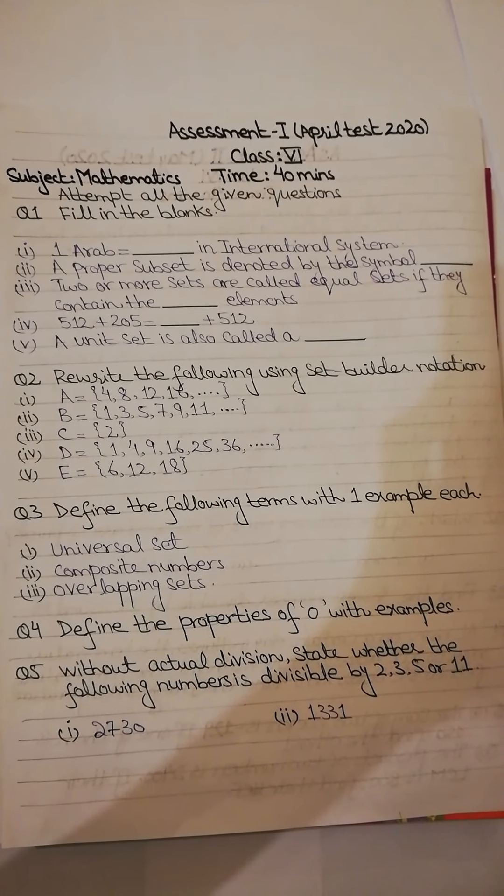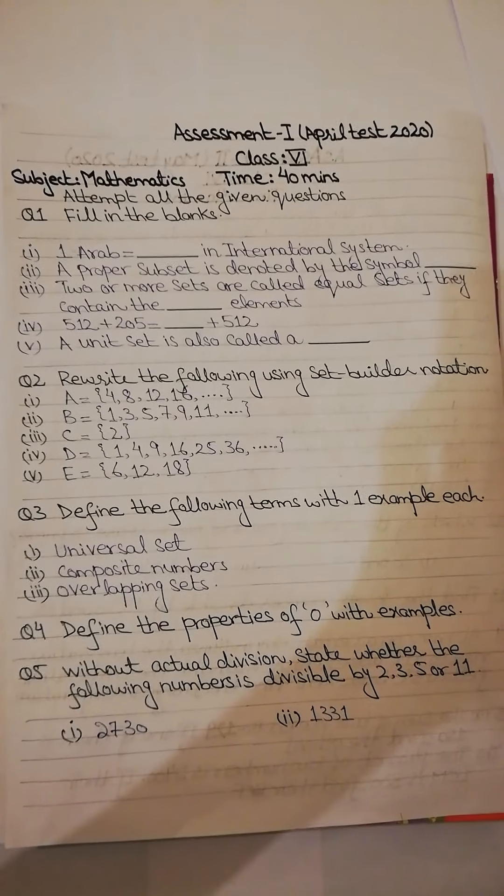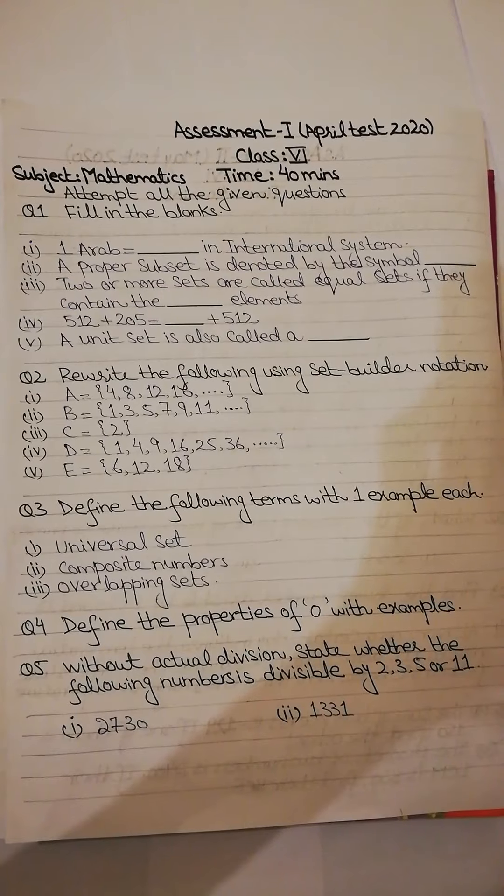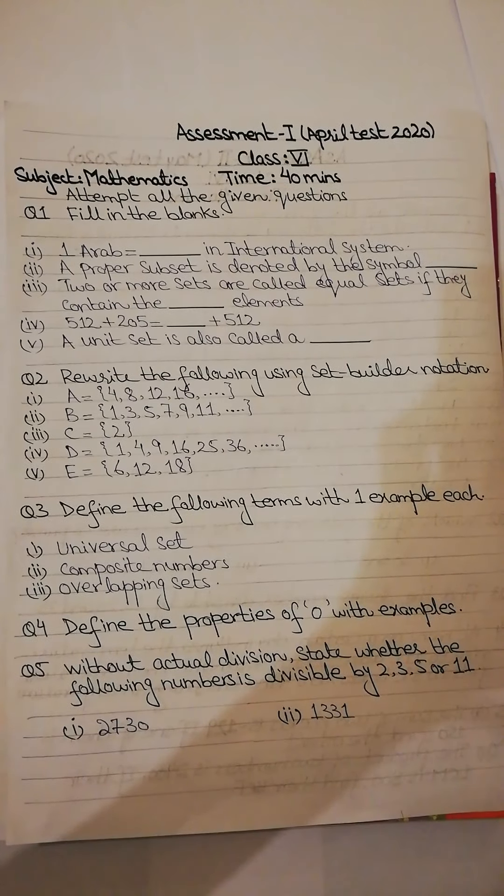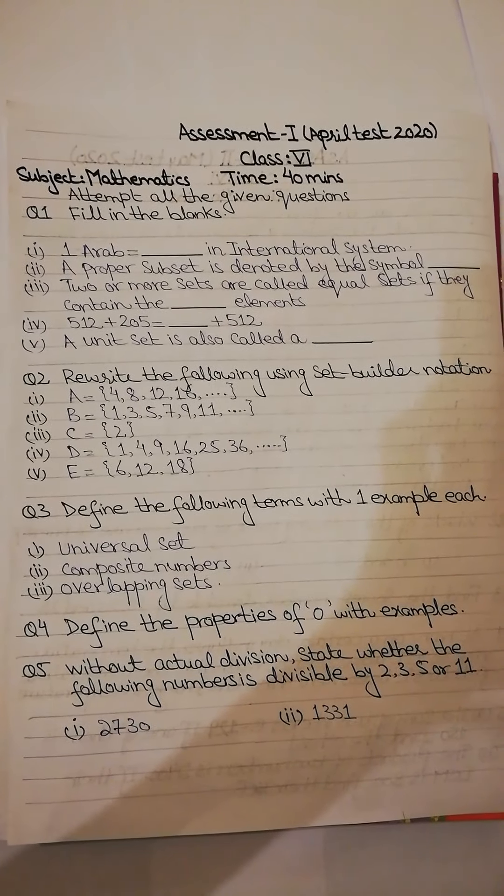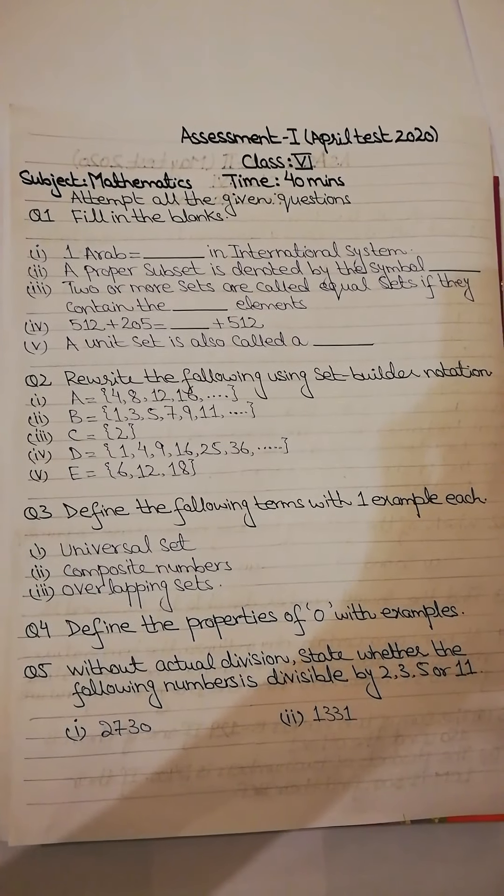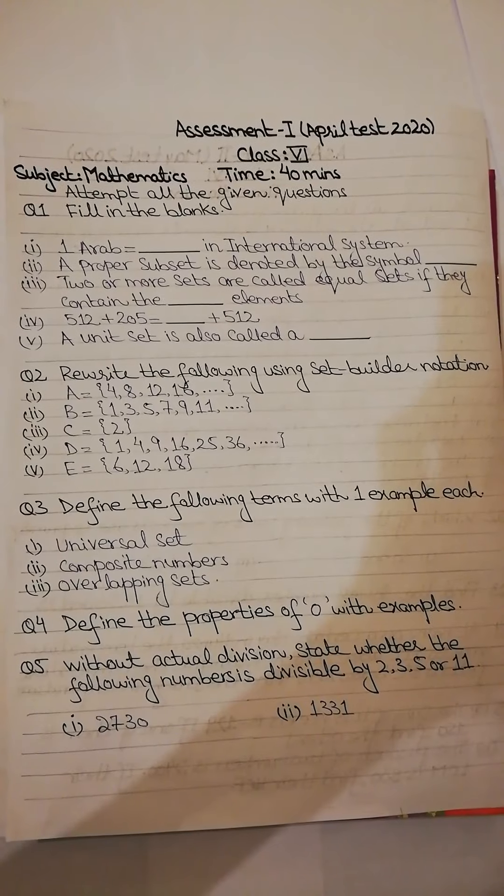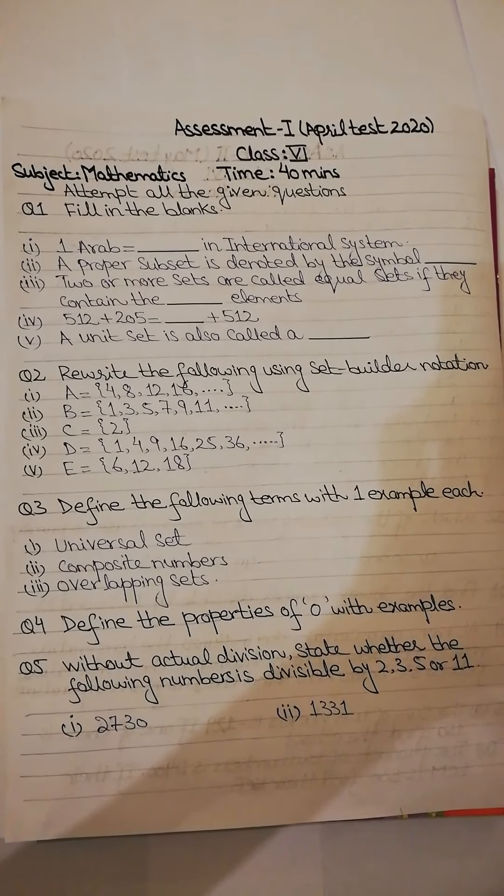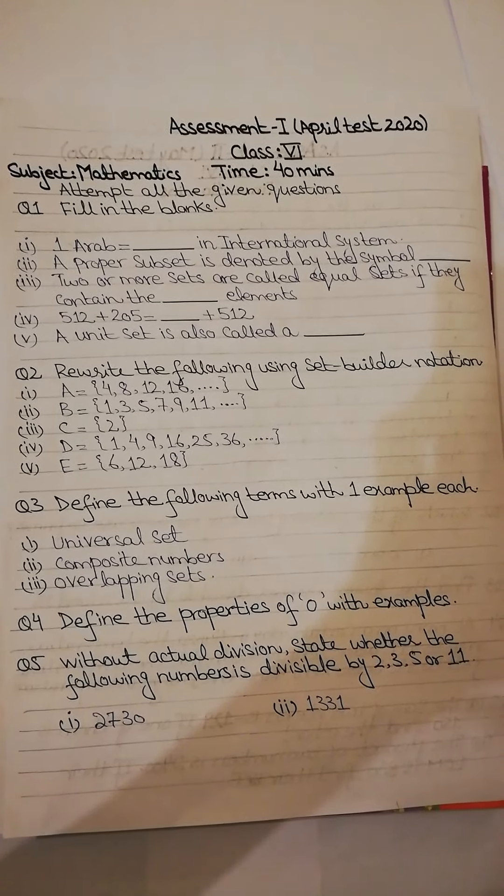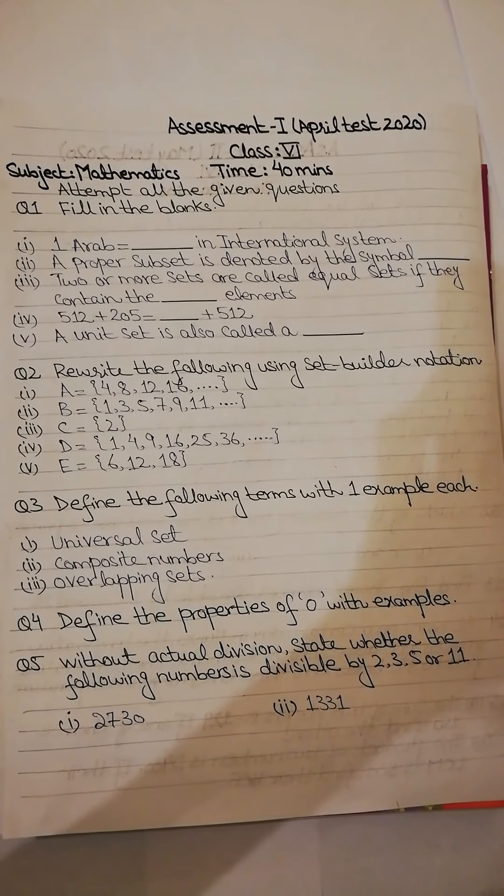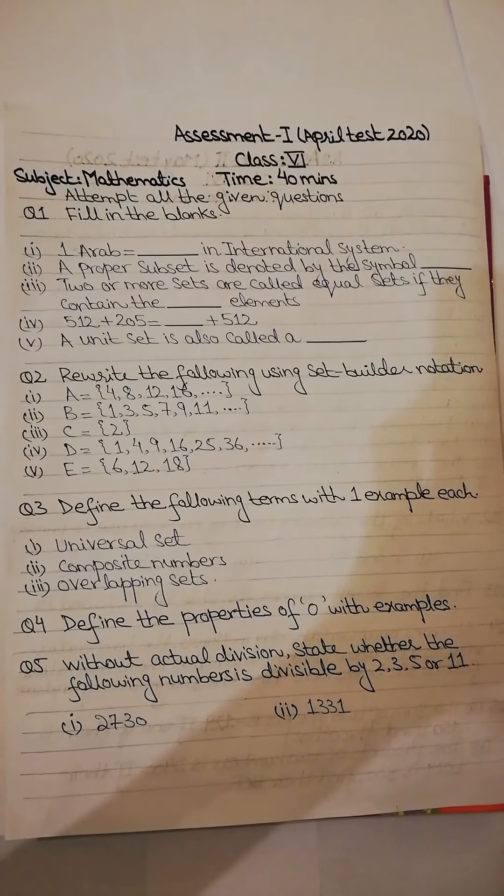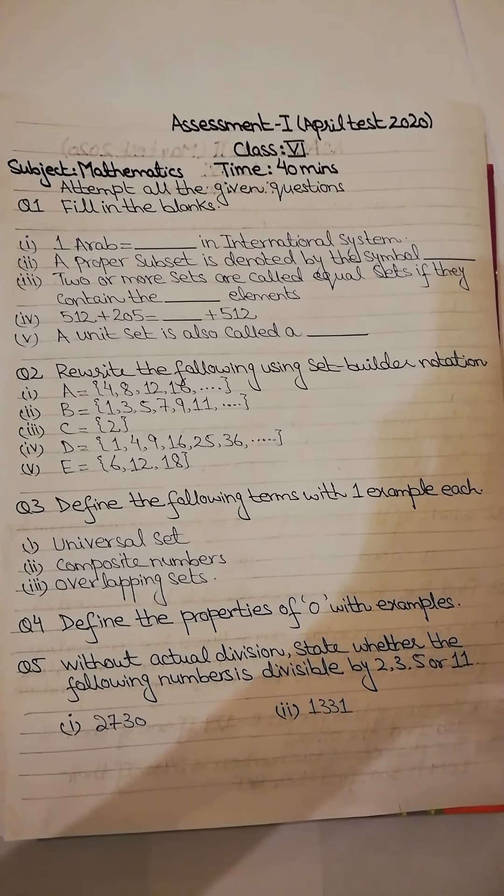Now question number 5 is without actual division, state whether the following numbers is divisible by 2, 3, 5 or 11. Okay, without actual division you have to tell which of the following numbers is divisible by 2, 3, 5 or 11. First is 2730 and second is 1331. Okay, now you have to apply division rules for 2, 3, 5 and 11 and check which one is divisible by 2, 3, 5 or 11.